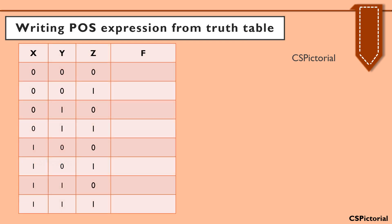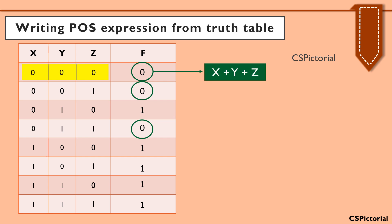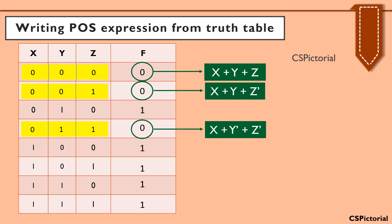Let us try to write a POS expression for a given truth table with output f. Pick out the truth table entries for which the output value is zero and write the corresponding max term. This is also just the opposite to that done for an SOP expression. In the first entry, x is zero, y is zero, and z is also zero. So the max term is written as x plus y plus z. Similarly, we get the next max term x plus y plus z bar. Remember: if the value of the input variable is zero, write the literal as such; if it is one, the max term will have the complement of the literal. In the same way, we get x plus y bar plus z bar.